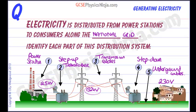You need to know those five parts of the national grid distribution system and be able to explain why we use a step-up transformer and a step-down transformer to save energy losses in the long distances that are taken up by the transmission cables.